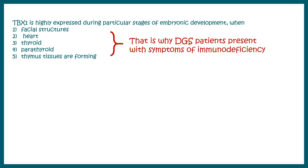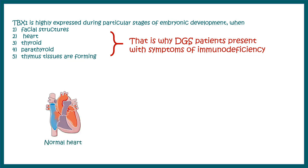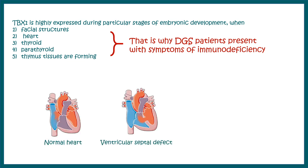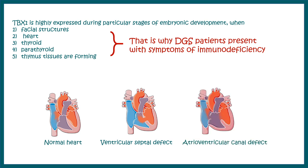The heart is majorly affected. In a DiGeorge syndrome patient, you would see ventricular septal defect or atrioventricular canal defect. These kinds of cardiac defects are pretty common in DiGeorge syndrome patients.